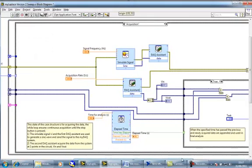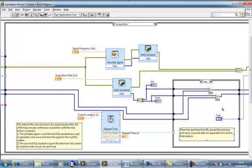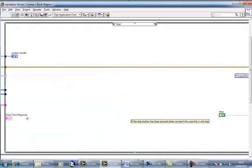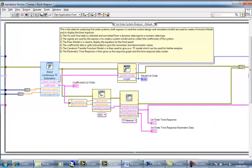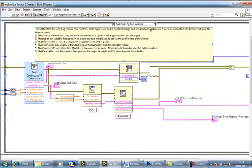Here we have our state machine architecture and our first state, the acquisition state. We have used Express VIs here to allow for easy configuration of the tasks. We've then got the stop tab, which has the final response data and the stop button. The first-order system and the second-order system analysis tabs are both the same. Apart from the Express VIs which require slightly different configurations, they have been placed in separate states to make following these codes slightly easier.